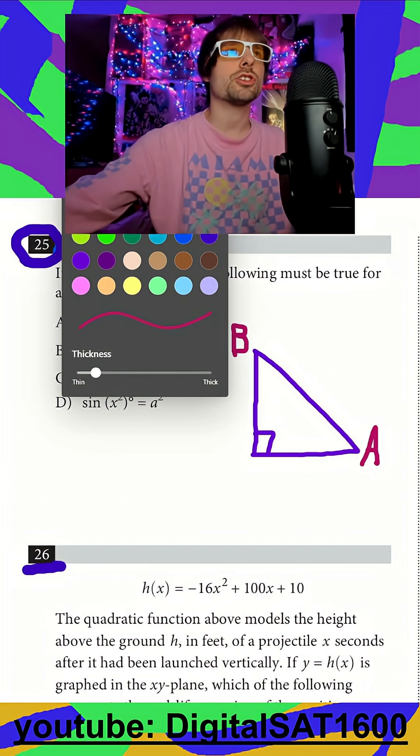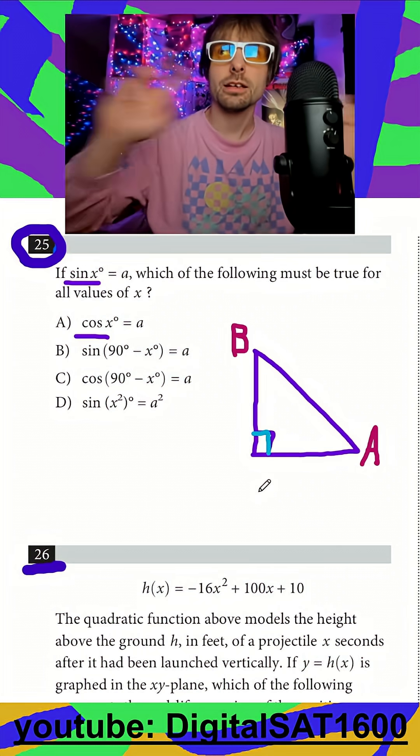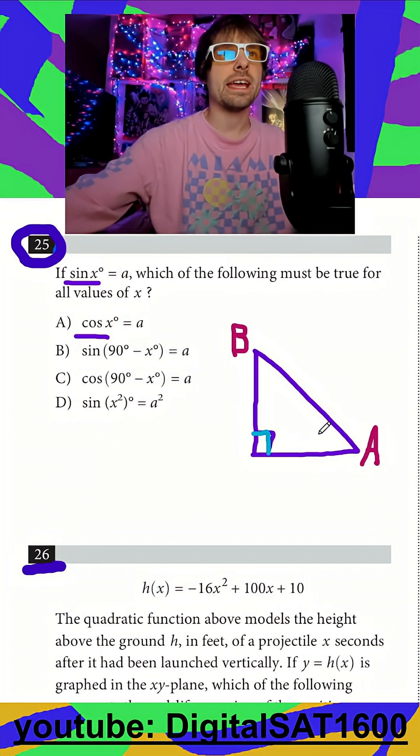We'll always give it two pretty easy angles because if this is already 90, we know A and B have to add up to 90, complementary. We'll say A is 30 and we'll say B is 60.